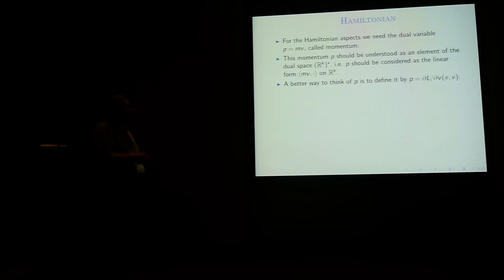Now I have to come to the Hamiltonian. And for the Hamiltonian aspect, we need the dual variable, p equals mv, which is called momentum. But in fact, this dual variable should be understood as an element of the dual space. So you should think of p as the scalar product of mv by mv. So this is a linear form. In fact, a better way to think of it is to just define it as a derivative with respect to the speed of the Lagrangian because the derivative is a linear form. So the Hamiltonian, then, is defined by the kinetic energy expressed in the momentum variable, which is this one, plus the potential energy. So the sum is the total energy.